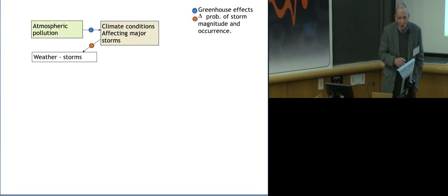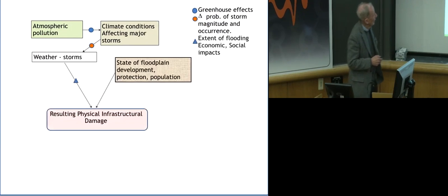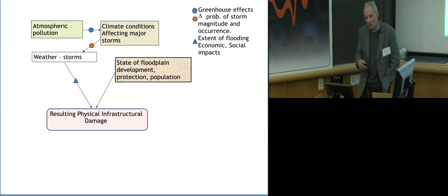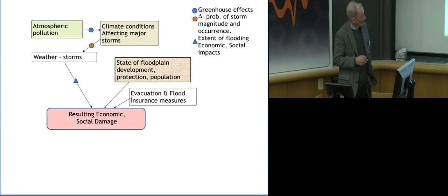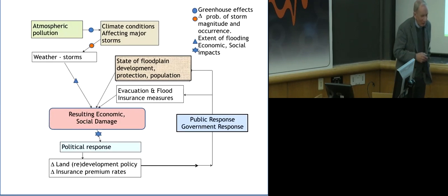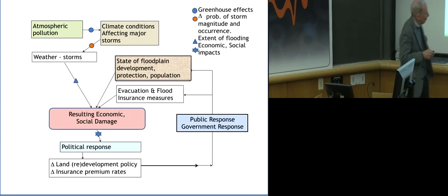And so what we do is put the model together. The model starts from the fact that the atmosphere would cause climate change, which affects the probability of having a storm like Sandy. And then we have another model that relates the storm to the flooding that's going to occur on the floodplain, and then coupled with the measures taken to mitigate damages. We have to think about what the political response might be for that. And then assuming that land redevelopment policy will change and that insurance drives behavior, it'll be sent back into what the population does.